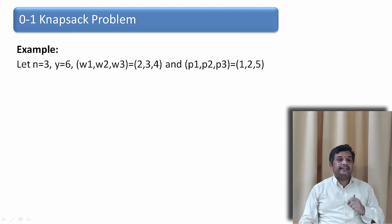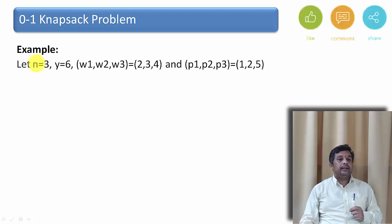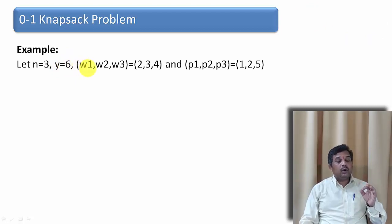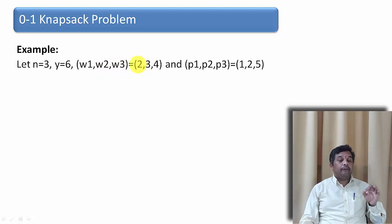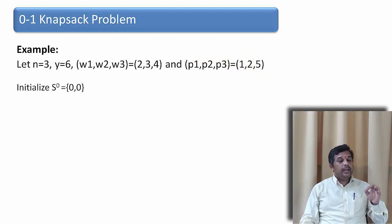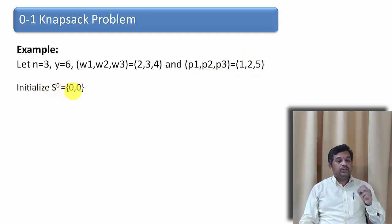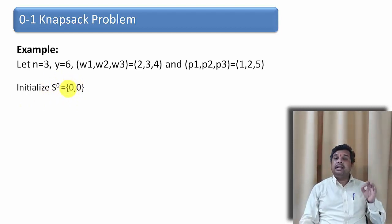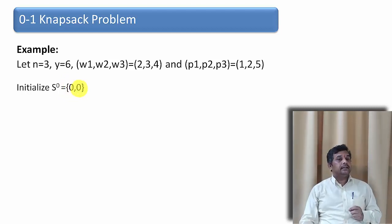Let us understand this with an example. We have three objects, n equal to 3. The capacity of the knapsack is 6 kg. The weights of the three items are 2, 3, and 4 respectively, and the profits we will earn are 1, 2, and 5 respectively. We initialize something called S0 as (0, 0), written in the form of profit and weight. This means so far we have earned zero profit with zero weight inserted into the knapsack.